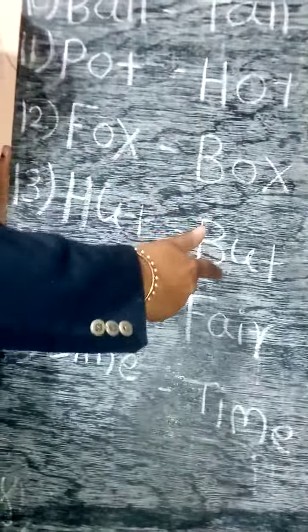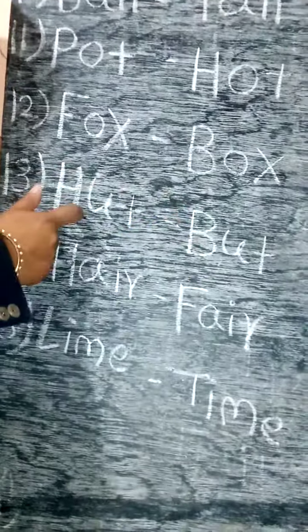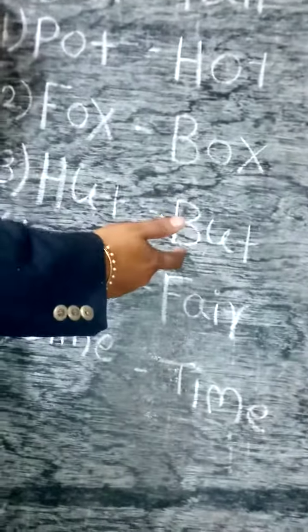H-U-T, hut. B-U-T, but. Hut, but. Hut means zopdi. But means parantu.